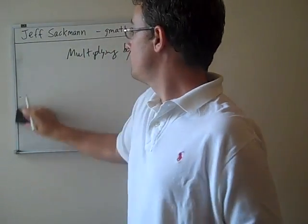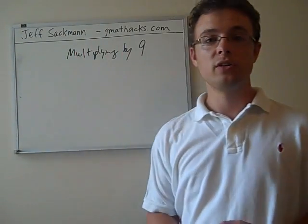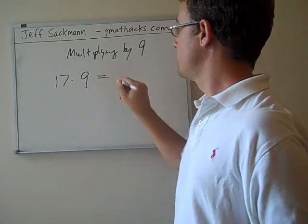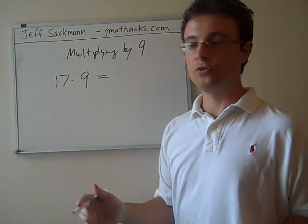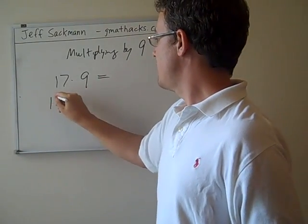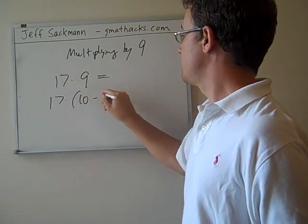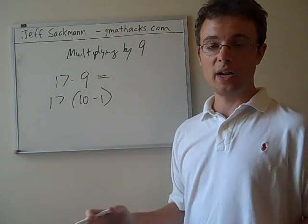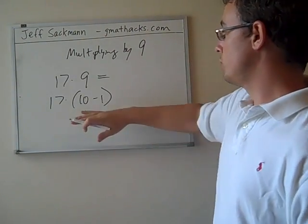So, what I'm going to do is take that operation and break it down a little bit. So, instead of doing 17 times 9, which as we've just established is a little tricky, we're going to turn that 9 into a 10 minus 1. 9 is the same as 10 minus 1. We're not doing anything shady here. We're just simplifying.